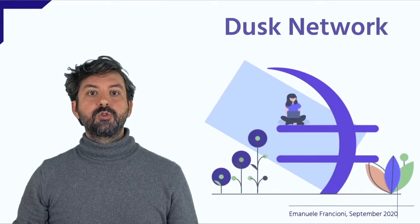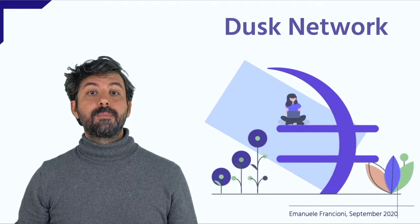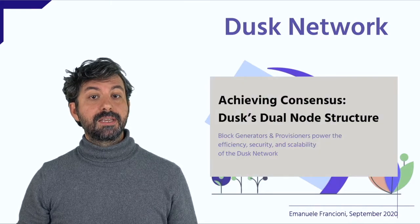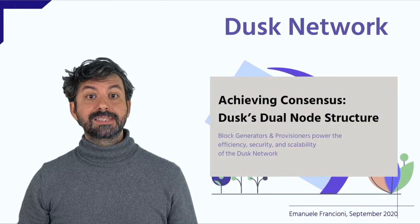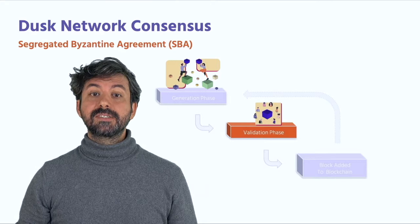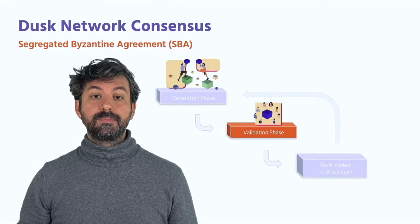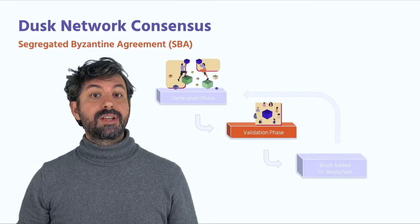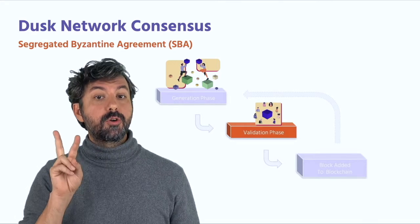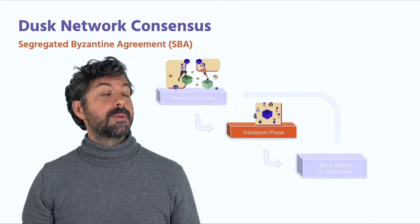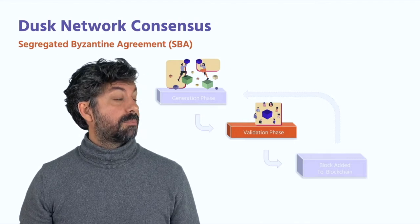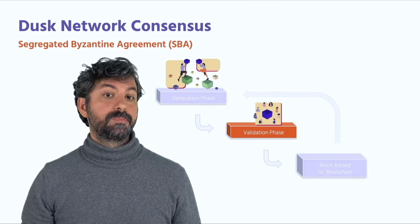Welcome! Today I'd like to talk about block validation and provisional staking within the DAS network. The DAS network consensus algorithm, called the Segregated Byzantine Agreement, consists of two phases: the block generation and the block validation.